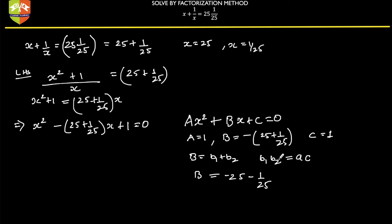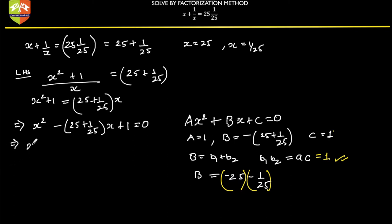We can write b as minus 25 minus 1 upon 25. The product of these two terms — minus 25 and minus 1 by 25 — equals plus 1, which equals a times c since a equals 1. So this confirms our factorization split is correct. Therefore the equation becomes: x squared minus 25x minus 1 by 25 times x plus 1 equals 0.